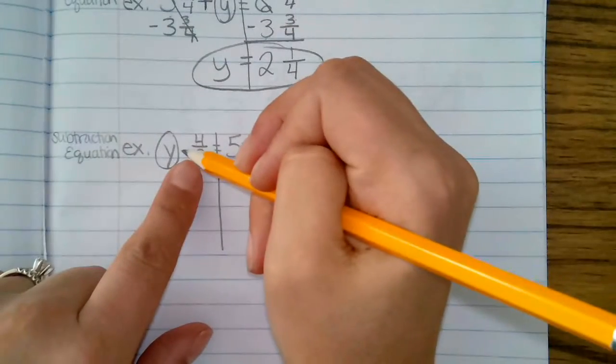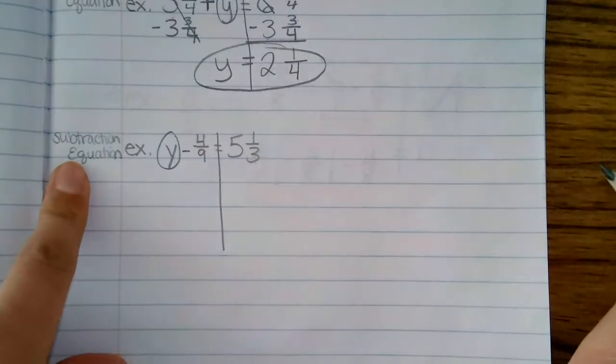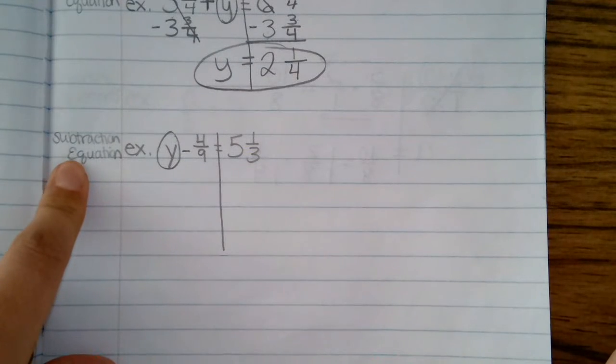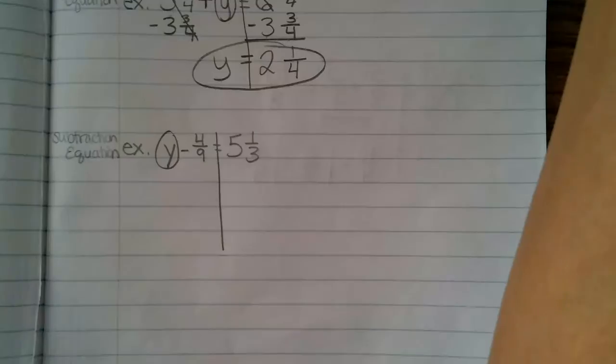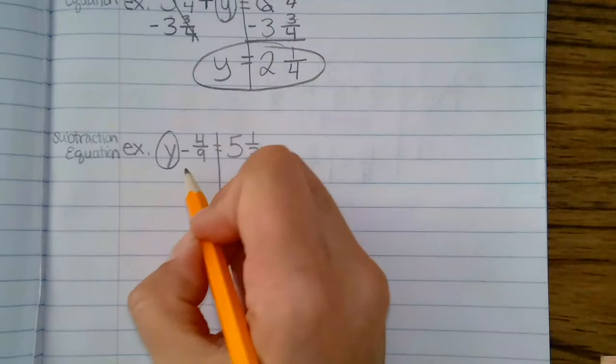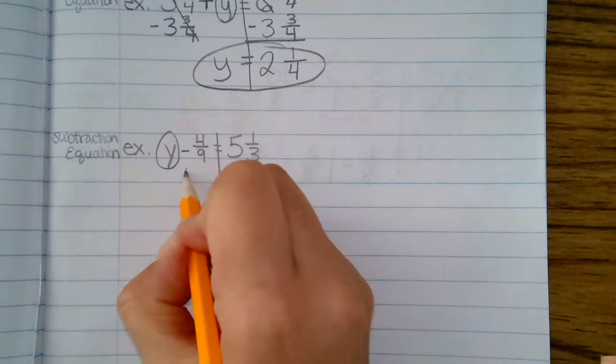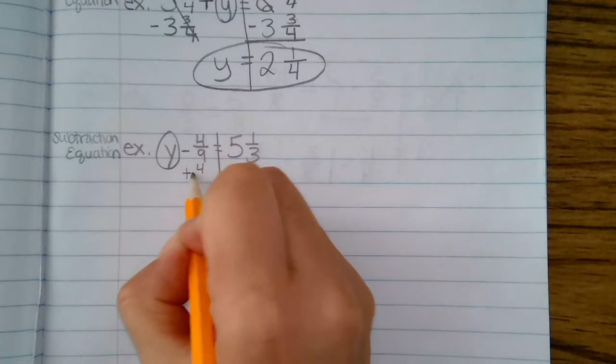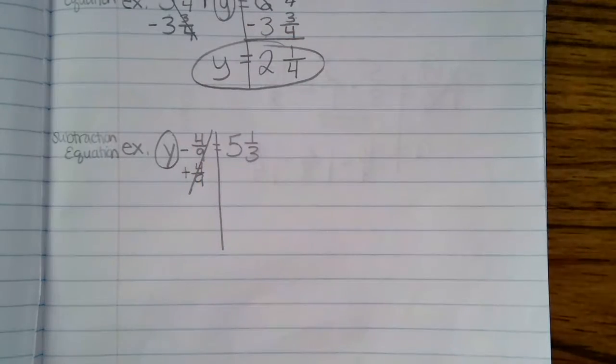I see here that this is a subtraction equation. So what is the inverse operation of subtraction? That is addition. So I'm going to be adding four ninths on this side. That will cancel out.